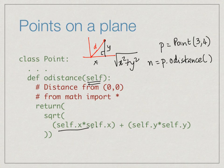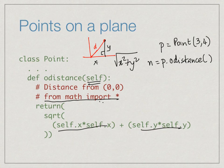The function looks at the current values of self dot x and self dot y, squares them, adds them, and takes the square root. One thing to remember is that square root is not available by default in Python — you have to import the math library, writing 'from math import *' at the top of your class definition. This is a function that returns information about the point, unlike translate which just modifies it.